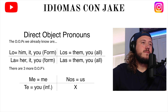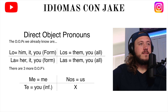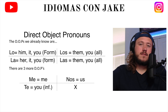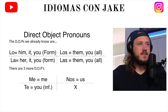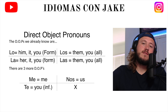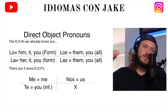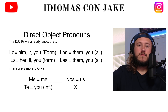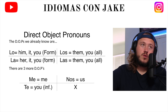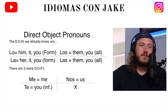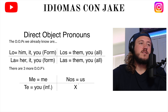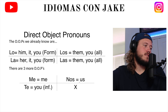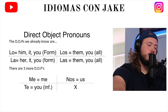Me — 'me' is going to mean me. I am the one receiving the action of the sentence. Yo soy la persona que recibe la acción. Te va a ser 'you' — you are the one who receives the action of the verb. And then nos, just like nosotros, is going to be 'us' — we receive the action of the verb.